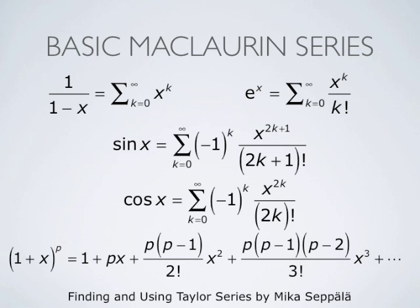The function (1+x) to the power p has the series expansion 1 plus p times x plus p(p−1) divided by 2 factorial times x squared plus p(p−1)(p−2) divided by 3 factorial times x cubed, and so forth. This series expansion is valid if the absolute value of x is less than 1, and it represents the function (1+x) to the power p. This is called the binomial series. The special case p equals negative 1 gives the geometric series with ratio negative x. This power p can be any number — it doesn't need to be an integer.